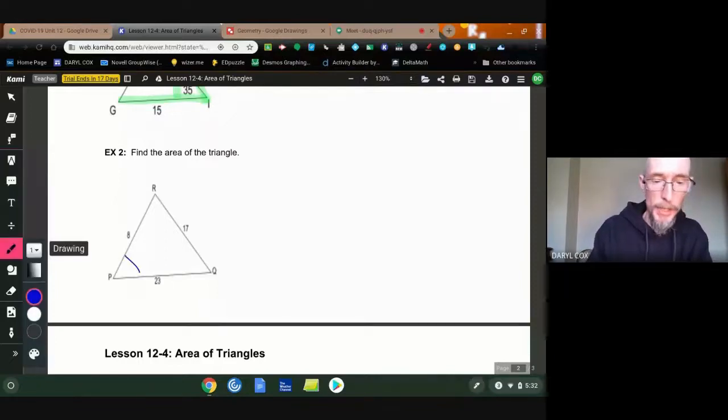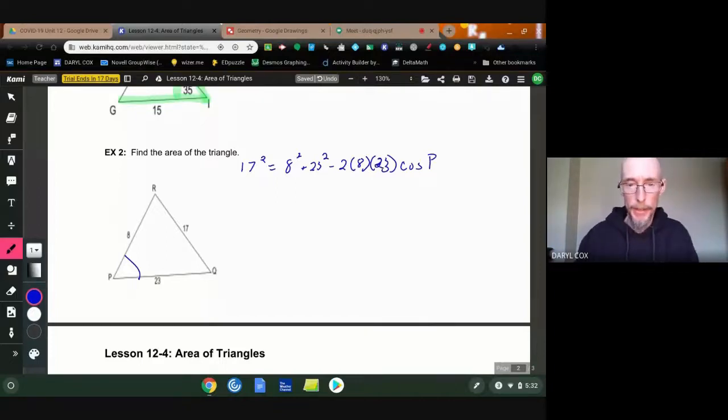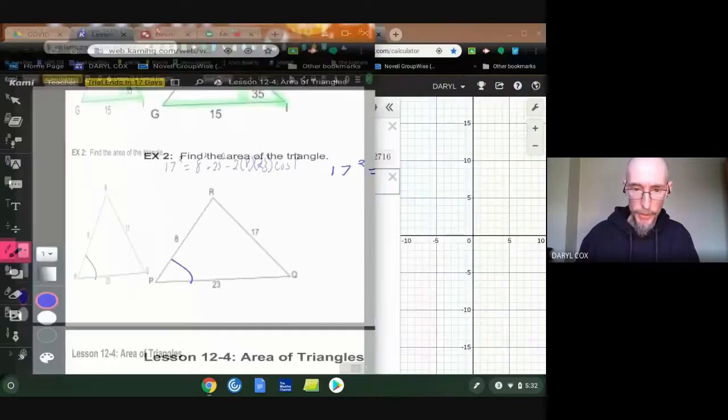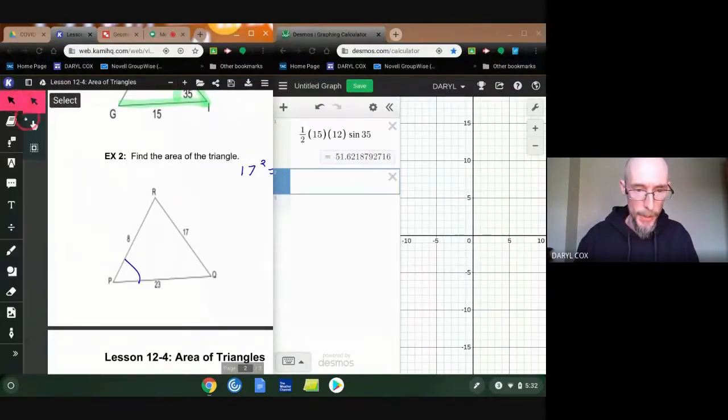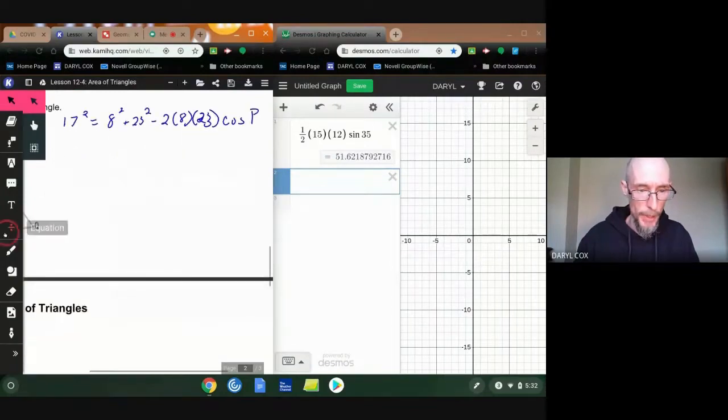So I'm going to find angle P. So that's going to be 17 is my lonesome side. So 8 squared plus 23 squared minus 2 times 8 times 23 cosine of angle P. So again, I know three sides. I need one more to get that angle. Make that look like a 2. So I'm going to go to my calculator now. In fact, let's take that over to the side. And let's slide it over some so I can see what's going on.